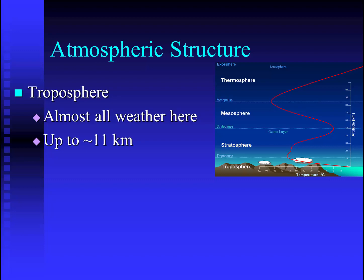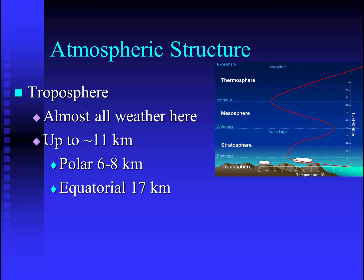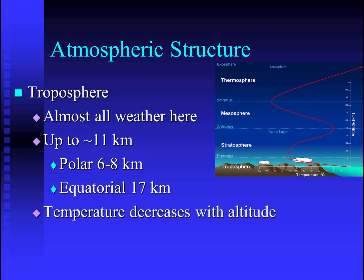In general we say the troposphere is around 11 kilometers thick. That's an approximate number because the troposphere at the equator is much thicker than the troposphere at the poles. This is due in large part to the Earth's rapid rotation. Another important thing to notice is that temperature drops with increasing altitude — the higher up you go, the colder it gets — until you reach the upper limit of the troposphere, known as the tropopause.